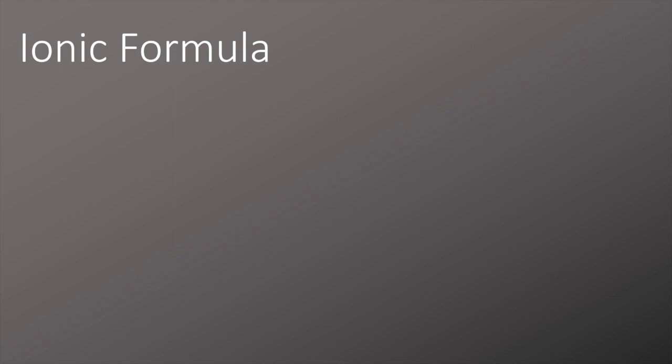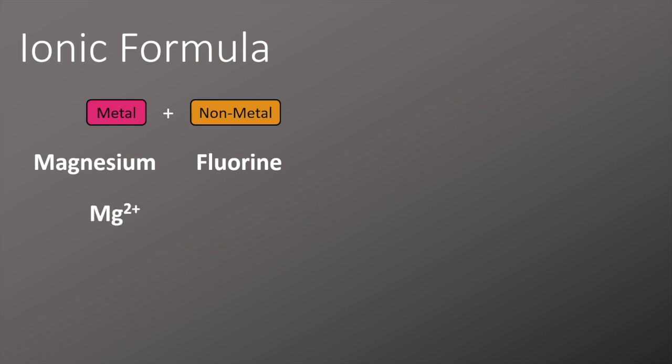So before we can understand ionic equations, we need to be able to do ionic formulas. We'll look at a couple of examples on the next few slides. This first one we're going to look at metal with a non-metal element. We've got magnesium and fluorine, and we'll look at the charges to start off with on the ions. We'll have magnesium as a 2+ ion because it's in group 2, and fluorine is a 1- ion because it's in group 7.